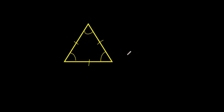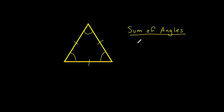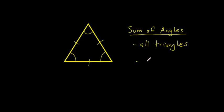That brings us to a rule called the sum of angles. The sum of angles applies to all triangles, and it says that all the internal angles of a triangle have to add up to 180 degrees.